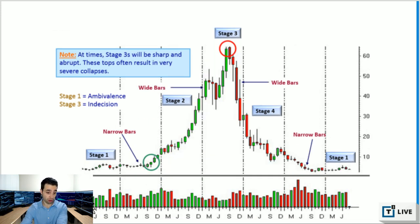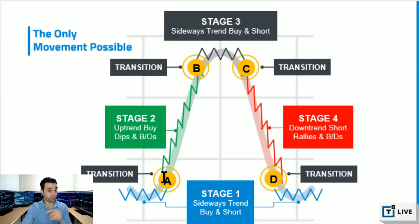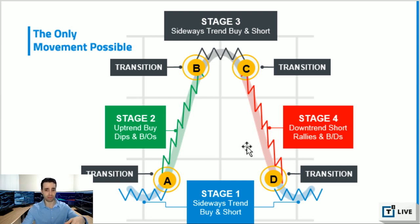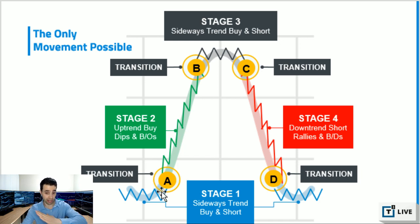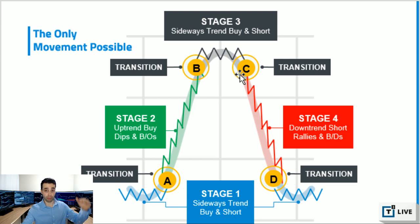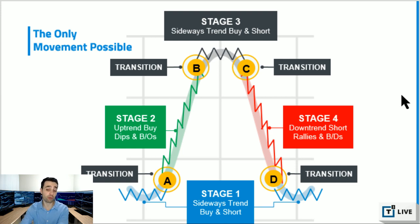Based on this cycle, I can figure out where the best entries are. In your opinion — feel free to comment below — what areas on the chart likely provide the best opportunities long and short: is it A, B, C, or D? If you answered A and C, you'd be right. Transition A is the bullish transition that leads to a stage two uptrend, so that's the best area to buy. Transition C is the breakdown which leads to a long-term sell-off — and that's what we're going to talk about today.